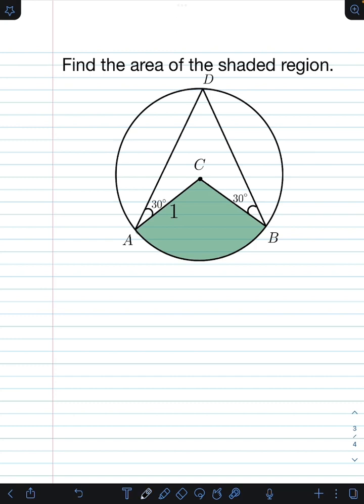So here's my approach. I will try to connect the segment from the points C and D. And therefore, we have created two triangles ADC and BDC.